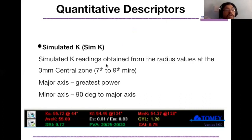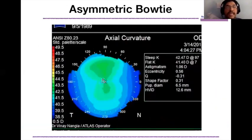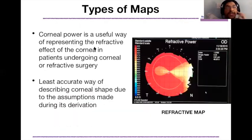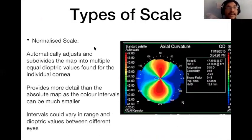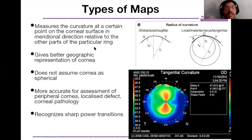Cirrus is a tomography device as it uses a dual Scheimpflug camera. Tangential maps: on a sagittal map, the cornea is assumed spherical and all curvature values are relative to the visual axis — like looking at the moon from far, where it appears smooth. On a tangential map, curvature of one point is calculated relative to the adjacent point — like going closer to the moon and seeing surface irregularities — making it better at detecting subtle local changes between adjacent points.